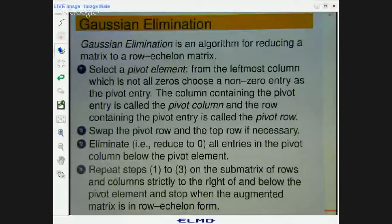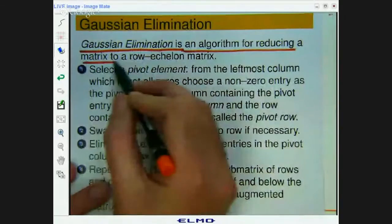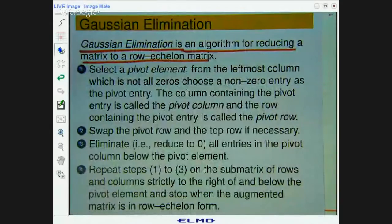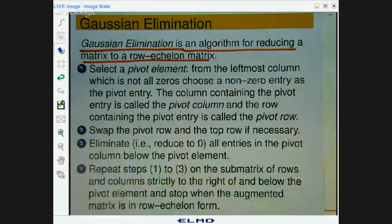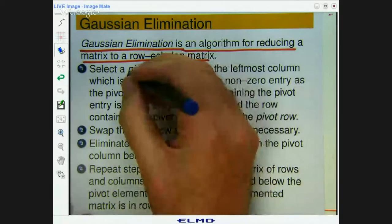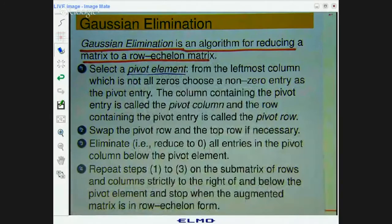Now, this is a whole bunch of information on Gaussian elimination. Basically, Gaussian elimination is an algorithm for reducing a matrix to a row echelon form. This is a lot to take in, and I think it's much easier if I just go through an example with you. The process starts with selecting a pivot entry or pivot element, and then doing some row operations on the matrix and some of the sub-matrices.